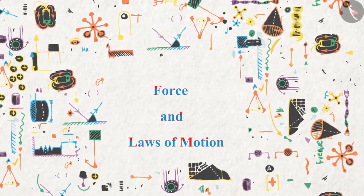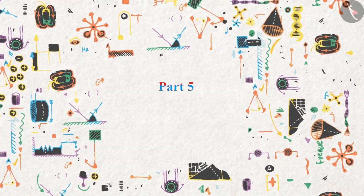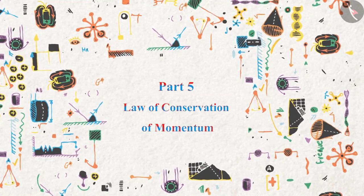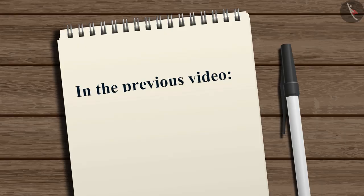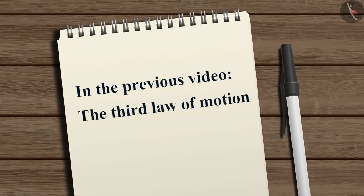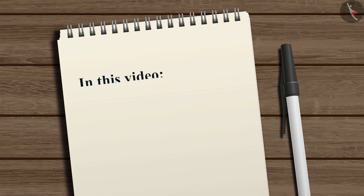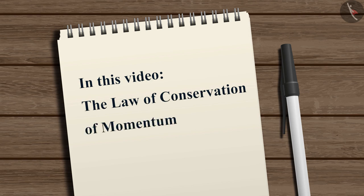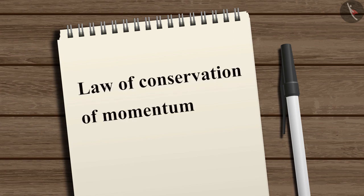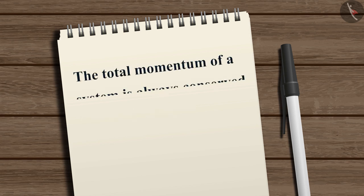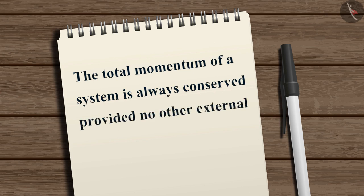Force and Laws of Motion Part 5: Law of Conservation of Momentum. In the previous video, we learned about the third law of motion. In this video, we will learn about the law of conservation of momentum. Just like any other conservation law of physics, the law of conservation of momentum tells us that the total momentum of a system is always conserved, provided no external unbalanced force acts on the system.